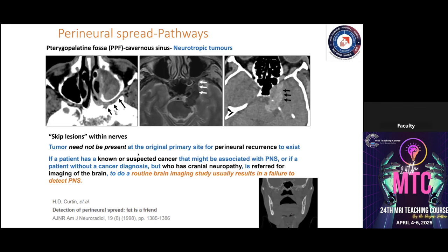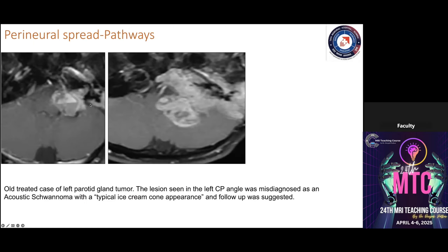A case example: a patient with parotid malignancy had anterograde facial nerve perineural spread misdiagnosed outside as acoustic neuroma. After surgery and irradiation, two years later there was complete destruction of the temporal bone and petrous apex due to untreated perineural spread. The nerve must be traced in its entirety. Perineural spread can also arise from the nodal side, not only from the primary site.